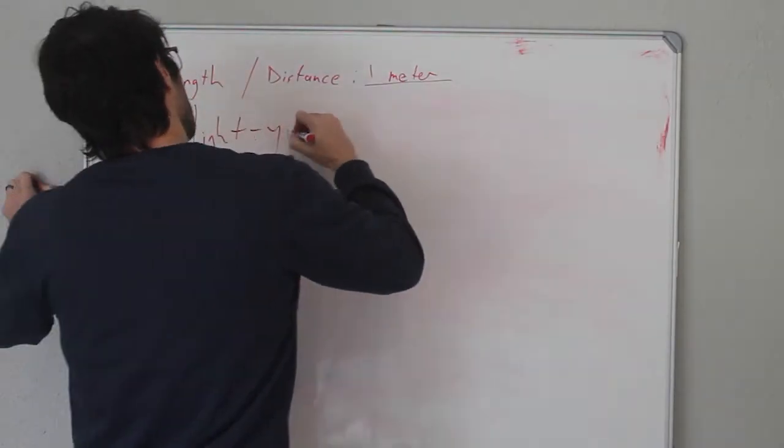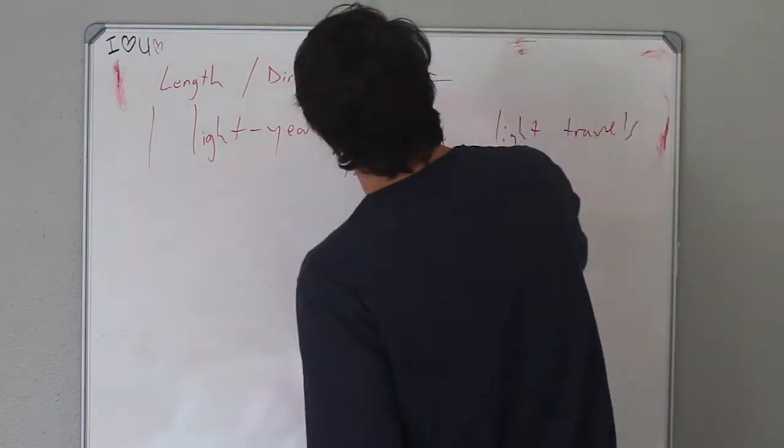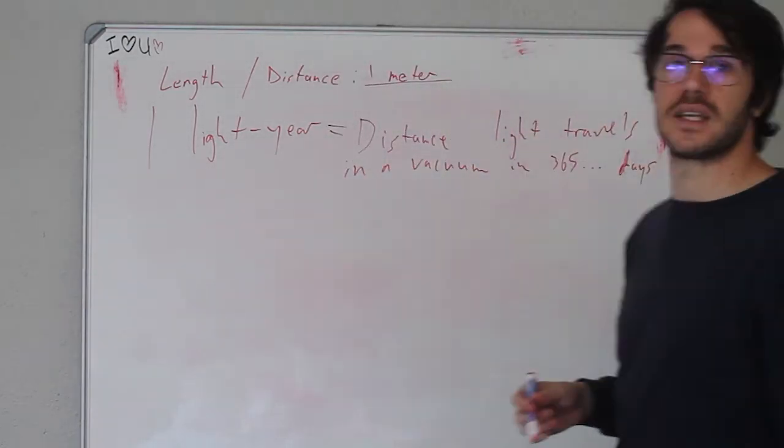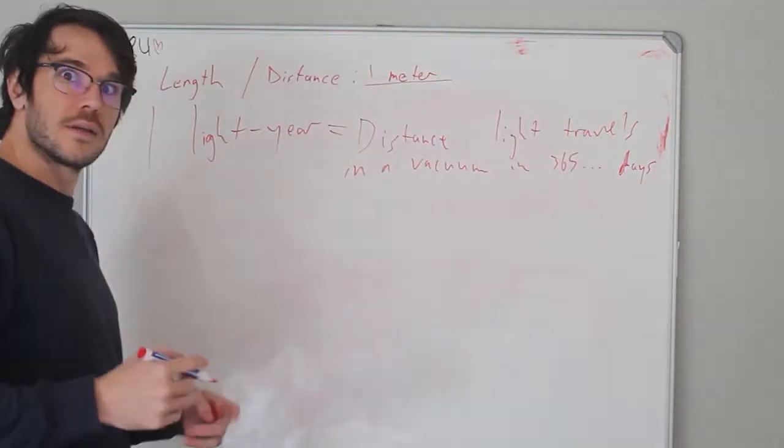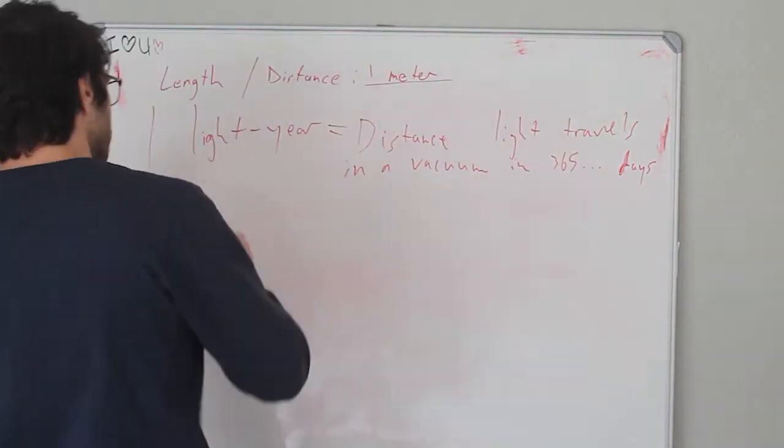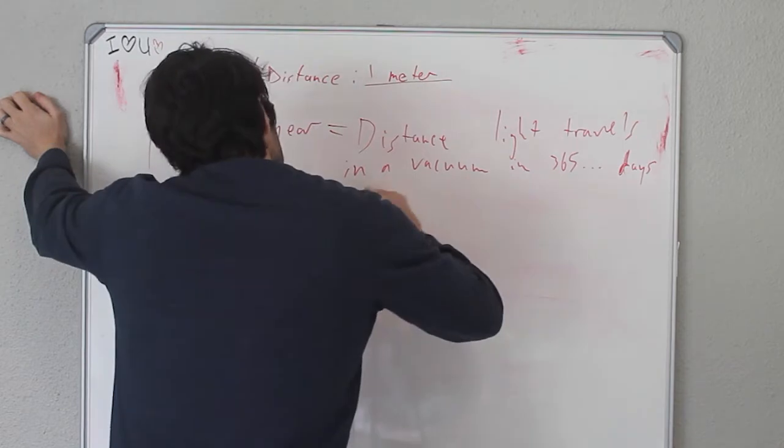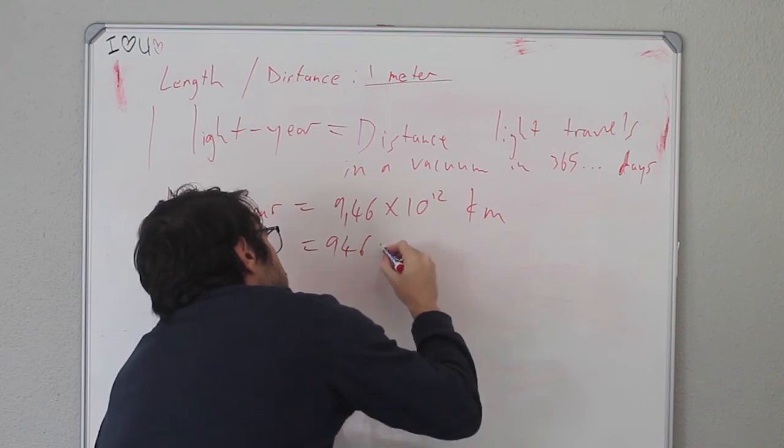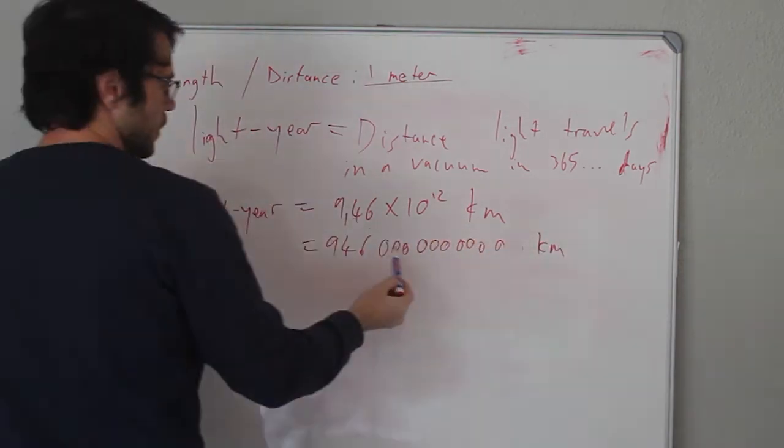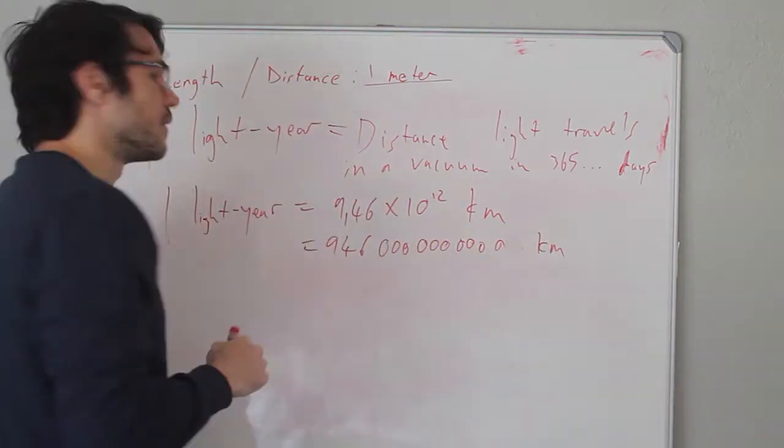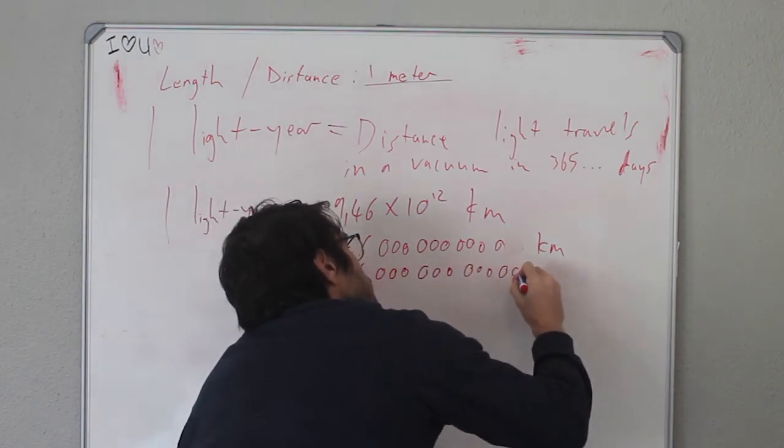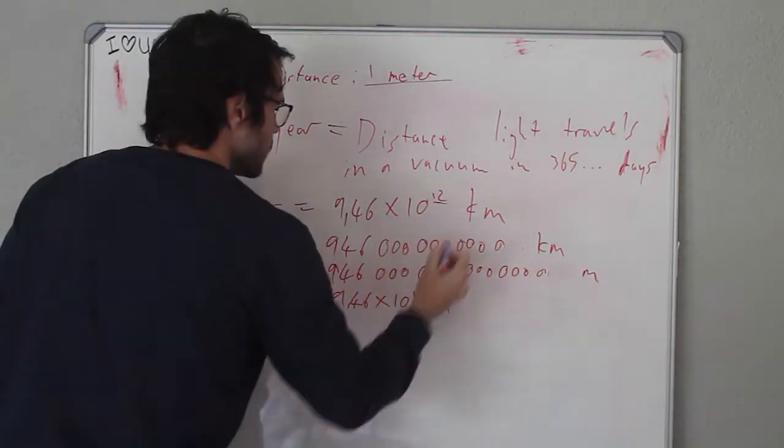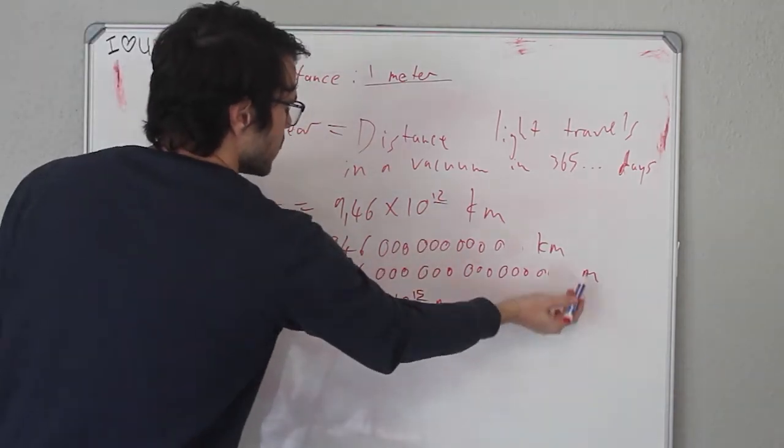To measure vast distances in the final frontier of space, we need a final frontier in the scale of distance measurement with a unit that's often confused to be a measure of time, but is actually a measure of distance, the light year. Now, a light year is the distance that light travels in a vacuum in a year and this is equal to 9.46 trillion kilometers. Both 9.46 times 10 to the power of 12 kilometers for each light year, which translates to 9.46 times 10 to the power of 15 meters.